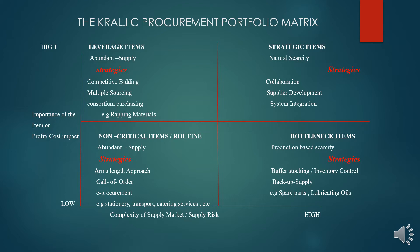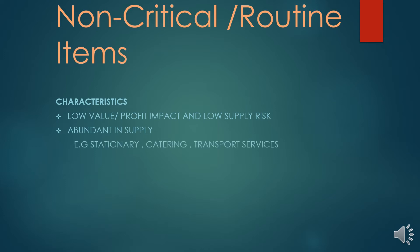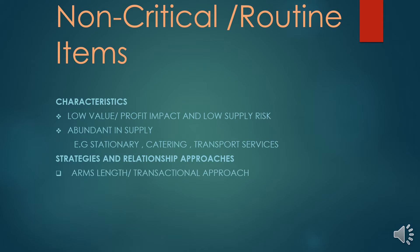Let us start our discussion with the first item: the non-critical or routine items. These are items that have a low importance or profit impact on the organization, and their supply risk is very low. They are in abundant supply and can easily be sourced, with many suppliers producing or supplying these products.